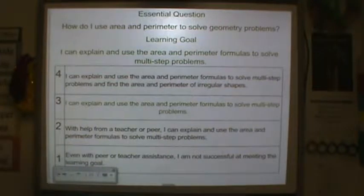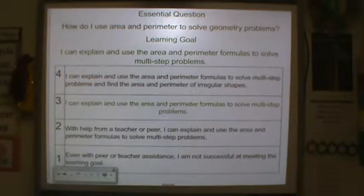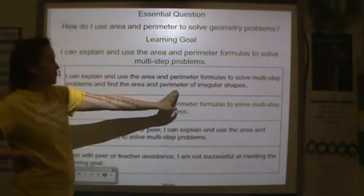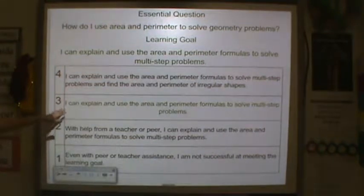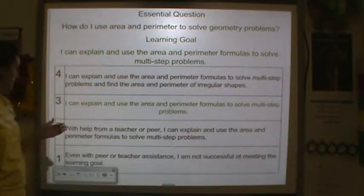Before we get started, go ahead and look at the learning goal again. Remember, our learning goal is I can explain and use the area and perimeter formulas to solve multi-step problems. The level four is you can do it with irregular shapes as well. If you were able to understand perimeter of irregular shapes, you've got a part of the level four, which is awesome. Level three is I can explain and use the area and perimeter formulas to solve multi-step problems.